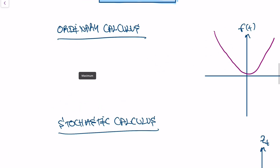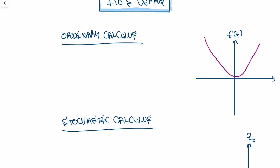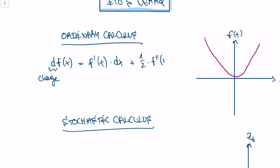If you know what a Taylor expansion is, you also know this: if you want to understand how a function value changes — d means a change in the value of a function — this is equal to the first derivative of the function times how much the variable changes, plus one-half times the second derivative of the function times how the variable changes squared.